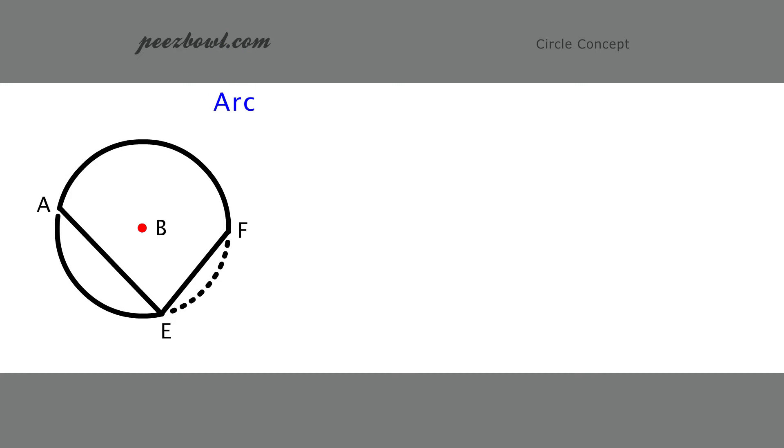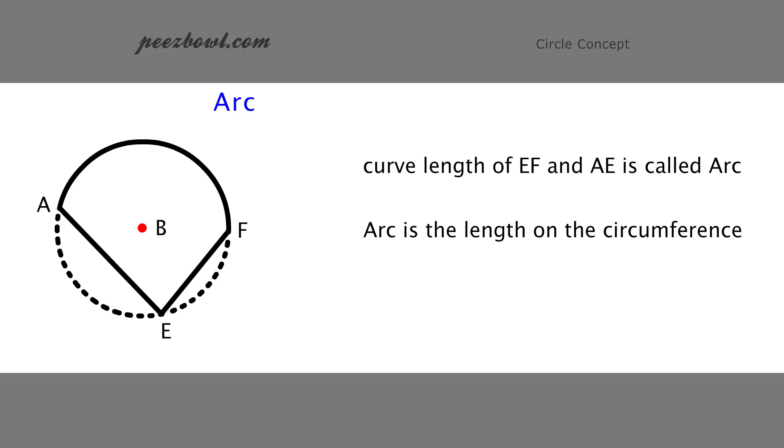Now, see the highlighted lines on the circle's curve. The curve length of EF and AE are called as arc of the circle. Arc is the circumference length of any two points on the boundary of the circle.